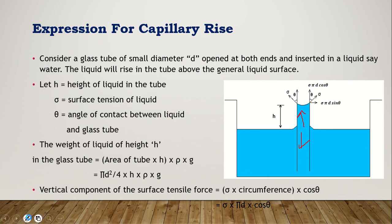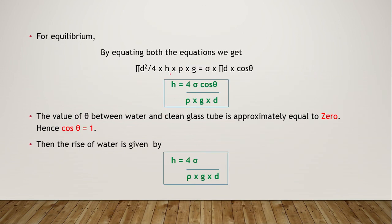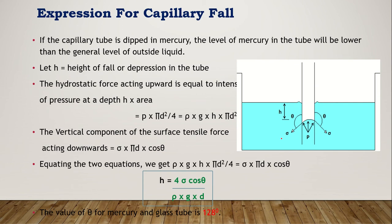For equilibrium, equate weight and surface tension force. The pi cancels with pi and d cancels with d, leaving: h = 4σcosθ / (ρgd). This is the general formula for capillary rise. For water, the meniscus is nearly flat so θ ≈ 0°, and cos0° = 1, giving h = 4σ / (ρgd). In numerical problems involving water, if theta is not given, use this simplified formula.